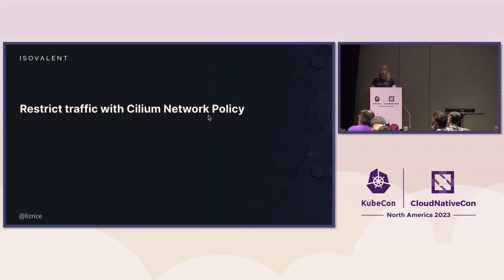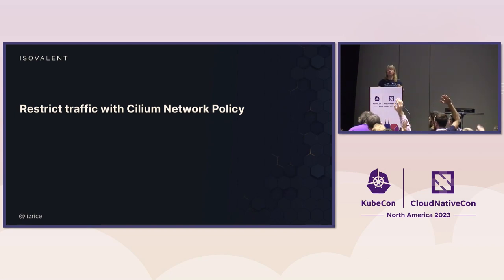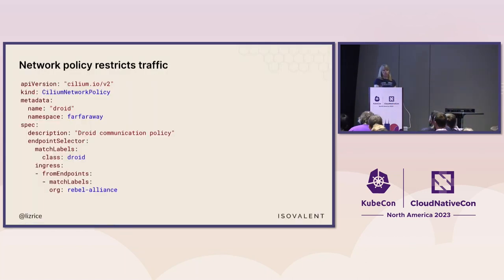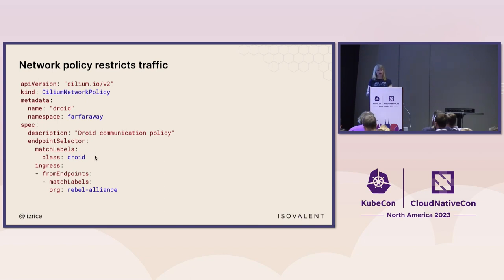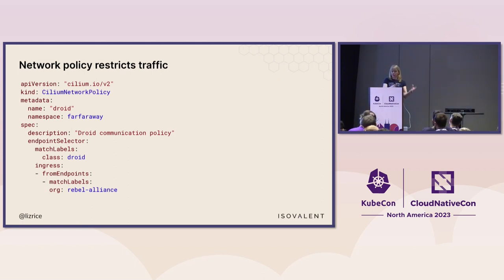So that's the encryption part, but it doesn't tell us anything about the identity of who's communicating with whom. In Cilium, for a long time, we've used network policy and identity based on Kubernetes labels to restrict traffic. You'll be familiar with network policies like this: this policy applies to the namespace 'far-far-away', matches endpoints with the label 'class=droid', and says ingress traffic must come from endpoints with the label 'org=rebel-alliance' — only permitting traffic from pods with that label.